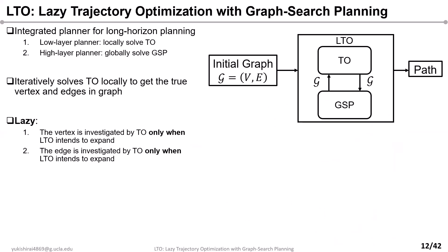Thus, we propose LTO, lazy trajectory optimization. Compared with the traditional integrated planner, LTO iteratively solves TO during GSP planning to update the true vertices and edges in the graph. To decrease the planning time, we make LTO lazy. It means that LTO uses TO to investigate vertices and edges in the graph only when GSP intends to expand the vertex and edges, while the traditional integrated planner eventually investigates all vertices and edges to find the feasible trajectory.